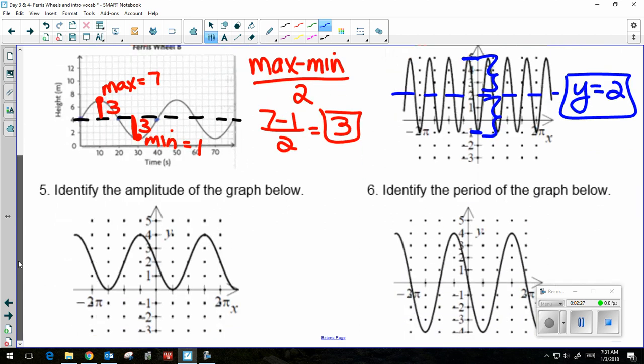I'll take a look at two more quickly. Number five, identify the amplitude. If I do it graphically, the middle of my graph between 4 and 0 is 2. This distance here is 2. So my amplitude is 2.